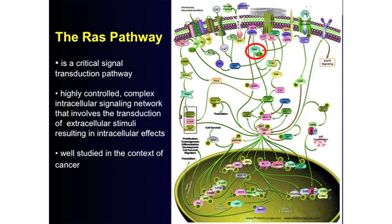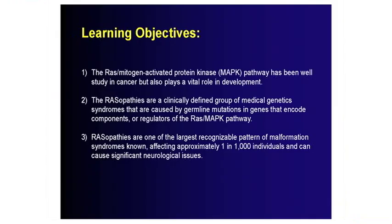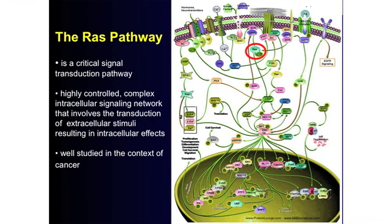I wanted to introduce today the RASopathies — medical genetic syndromes of the Ras MAPK pathway and its dysregulation. These are the learning objectives for our CME credit. We're going to talk about the Ras MAPK pathway, which has been very well studied in cancer, and why it's considered a cancer pathway. This is truly the Wild West when it comes to neurocognition and behavior in these kids and adults. When you put all these individually rare syndromes together, they actually make up the most common group of recognizable patterns of malformation in the human population.